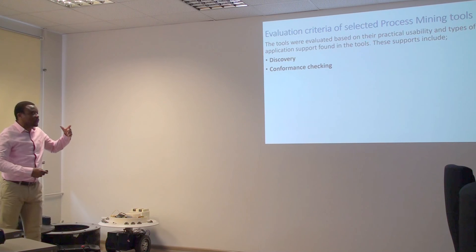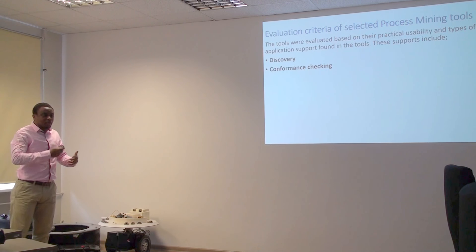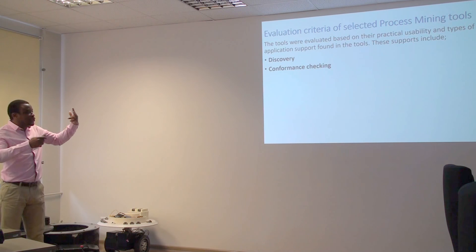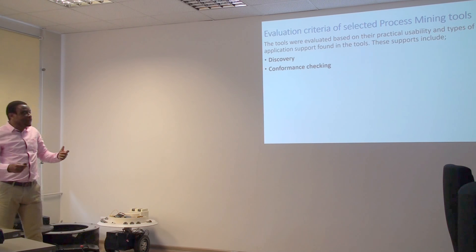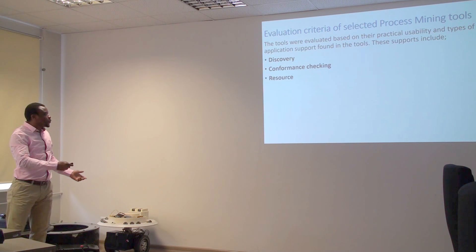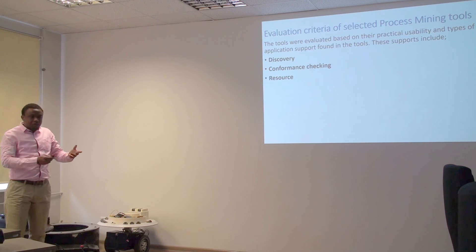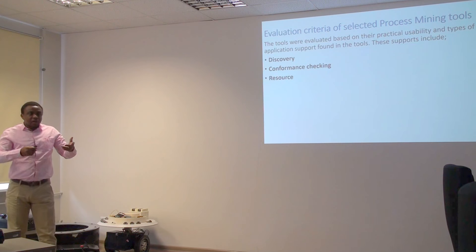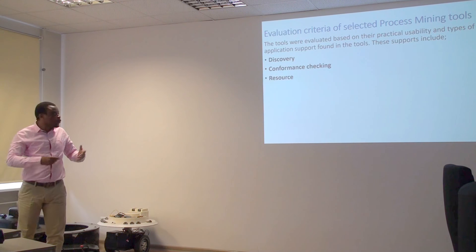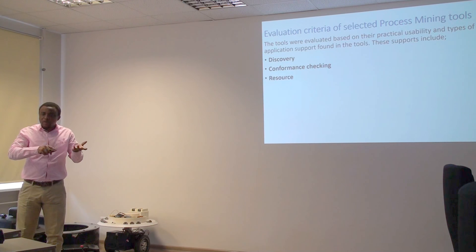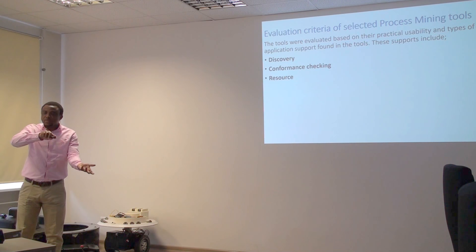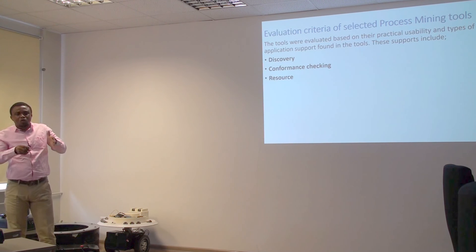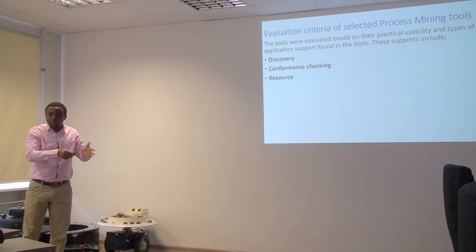The evaluation criteria I used came from my investigations and research in literature. There are basically two categories: practical usability and the functions supported by the tools. For functions, discovery is the process whereby the tool uses an algorithm to discover business process in the event log. Conformance checking varies between tools, but in literature it is defined as a replay — when the discovered model is replayed on the event log to find out if they conform to each other. It is from conformance checking that you can notice deviations, which can actually detect fraud in systems.